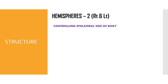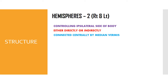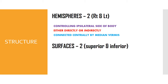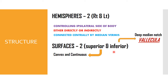The left hemisphere controls the left side. Note that in the cerebrum there is contralateral control over the body. The two hemispheres are connected centrally by a median structure. There are two surfaces: the superior surface, which is convex and continuous in nature, and the inferior surface, which has a deep median notch in the center.